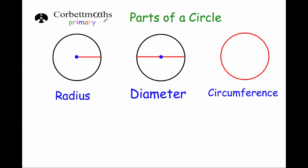So in terms of the parts of the circle, the parts of the circle you need to know are the radius, that's from the center to the edge of the circle. The diameter, the whole way across the circle, through the center. And the circumference, the whole way around the outside of the circle.